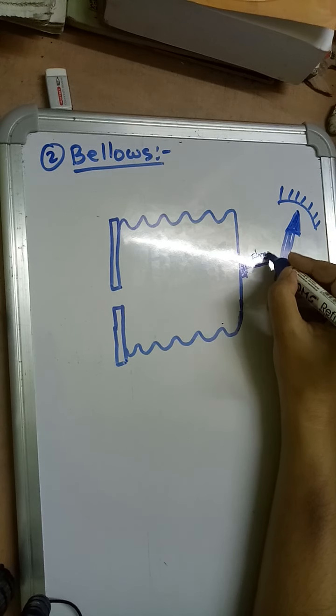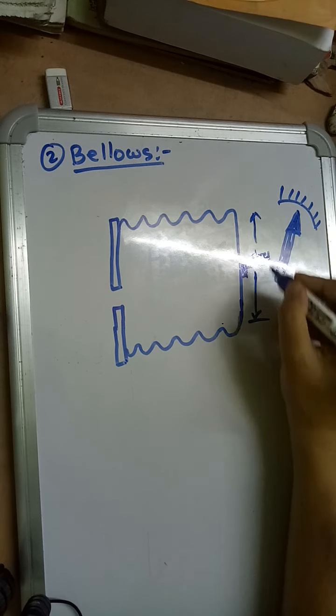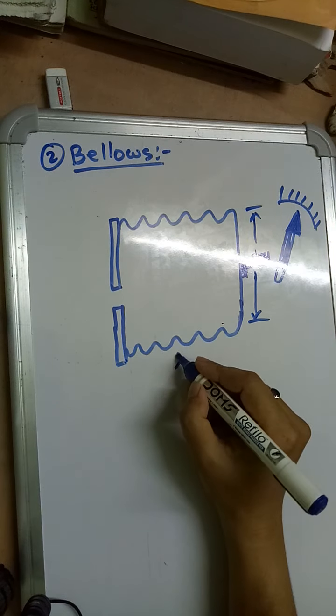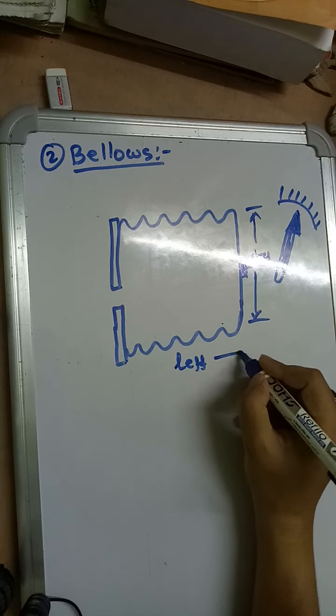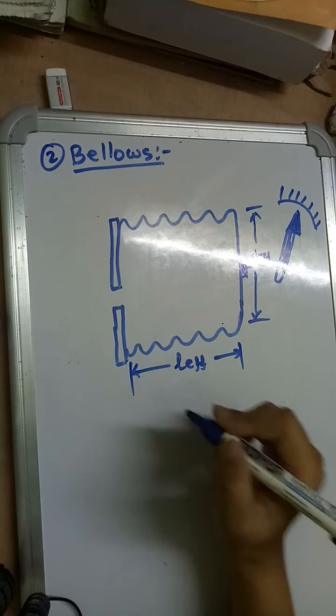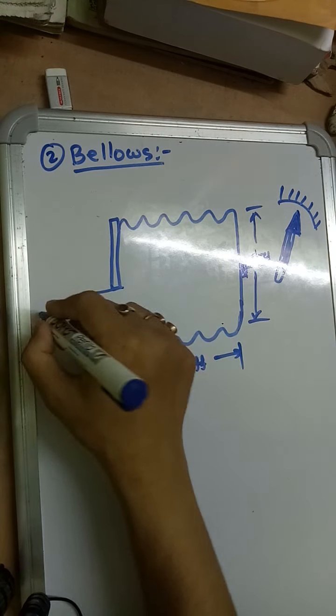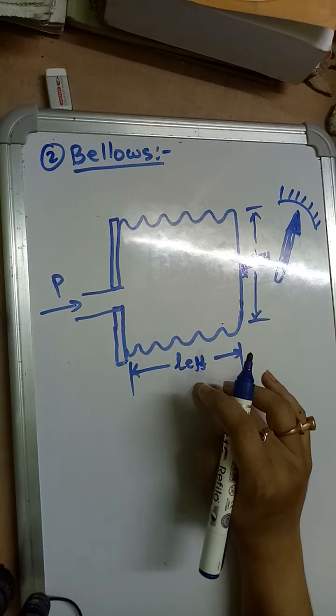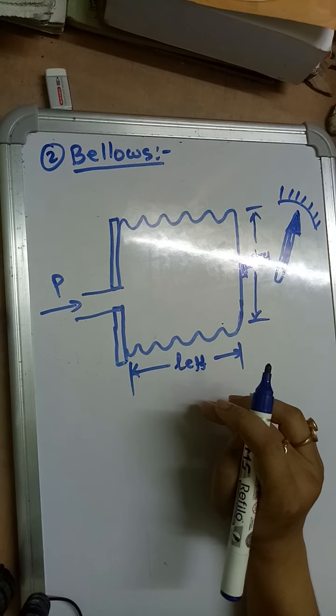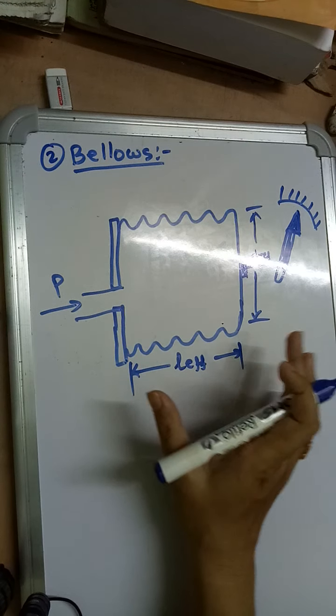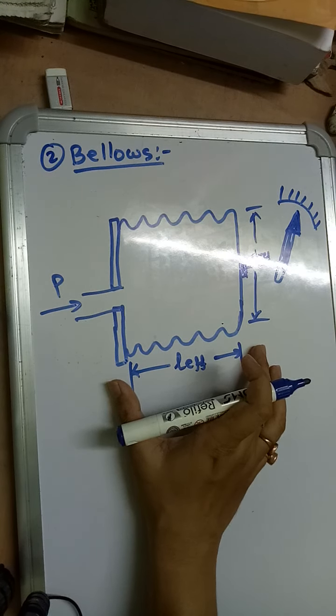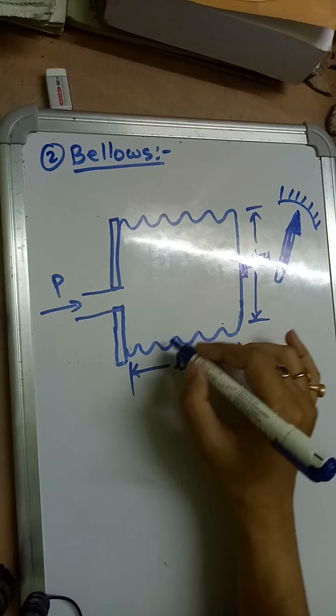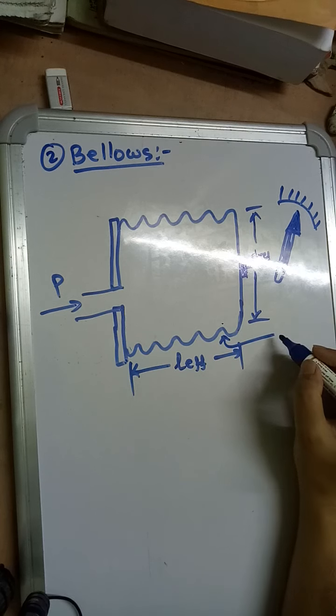D ref and L E double F - this length is called L E double F. Pressure will be applied from this side. D ref is called the reference diameter, and L E double F is called the effective length or the actual length when the pressure is not applied. These are called convolutions.